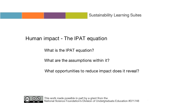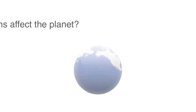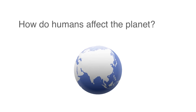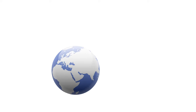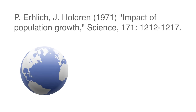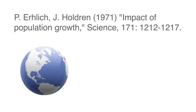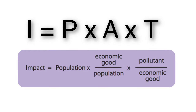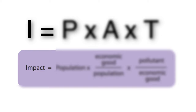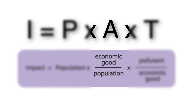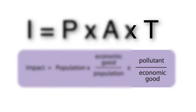In the early 1970s, scientists in the United States were attempting to calculate the impact of humans on the environment. One of the methods proposed by Ehrlich and Holdren is called the IPAT equation. In this equation, the environmental impact was proposed to be a product of the population, the affluence of the population, and the technology.